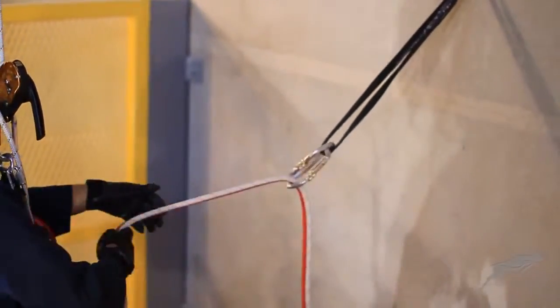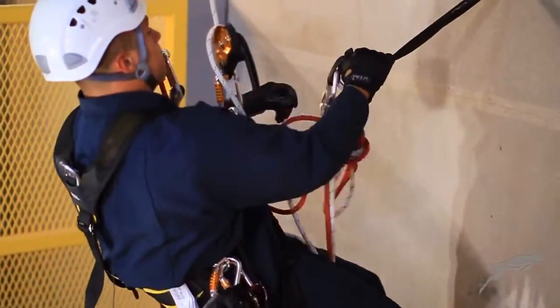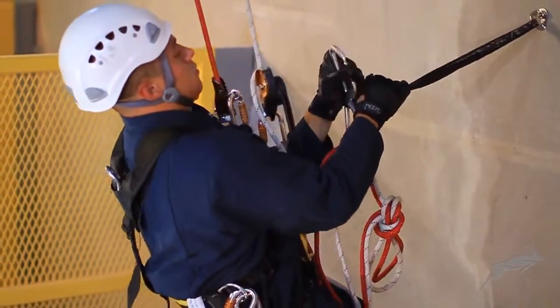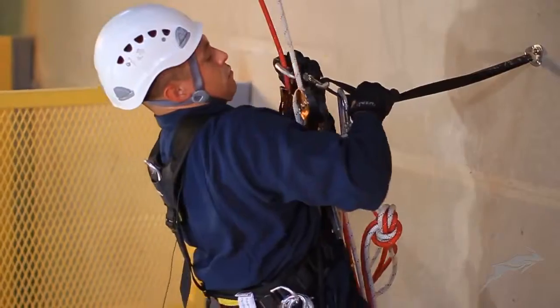Pull yourself into the deviation anchor point sufficiently enough to attach the original deviation carabiner above the chest ascender and backup device.